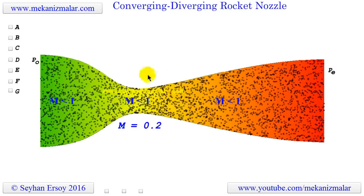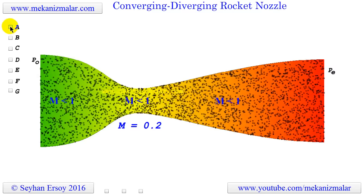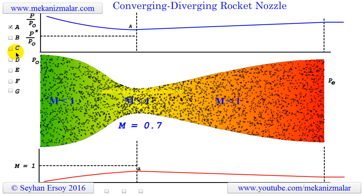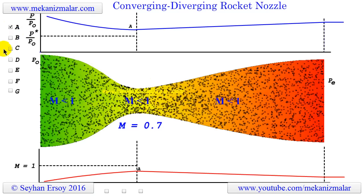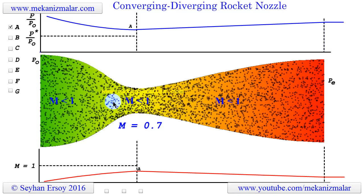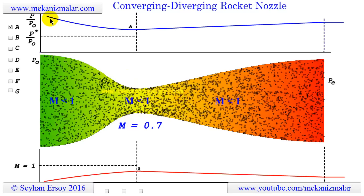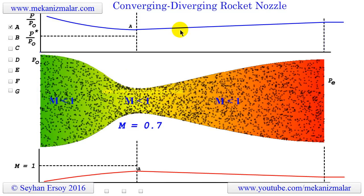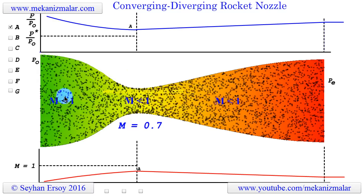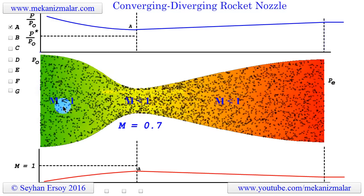Let's begin to drop the exit pressure gradually. For case A shown here, the exit pressure is reduced such that the flow speed reaches 0.7 Mach at the throat of the nozzle. As you can see, the flow behaves almost identical to the initial case we just discussed.